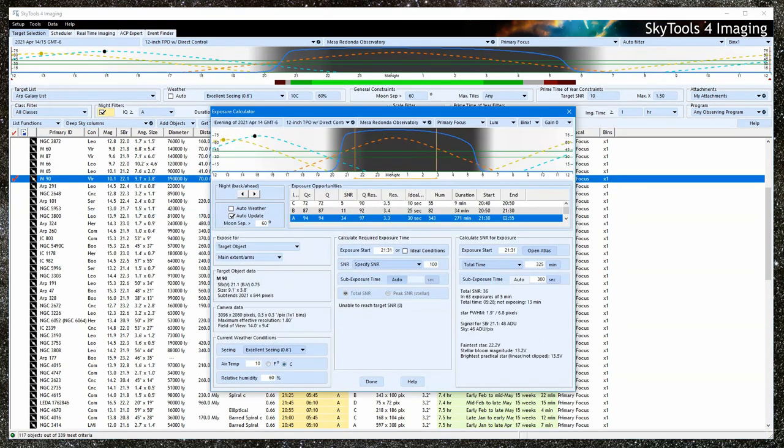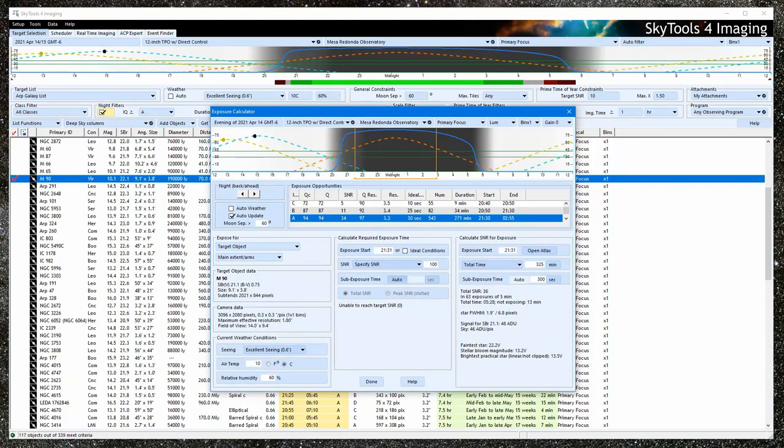These additional tools are almost always available via a right-click, which opens them with all of the context from where you clicked. For example, in this case we opened the exposure calculator for this object already set for this date, location, and imaging system. Using a right-click to open a tool in context is a core principle in SkyTools.